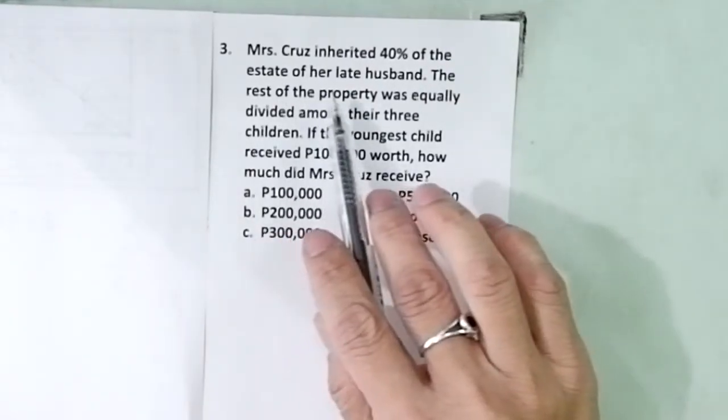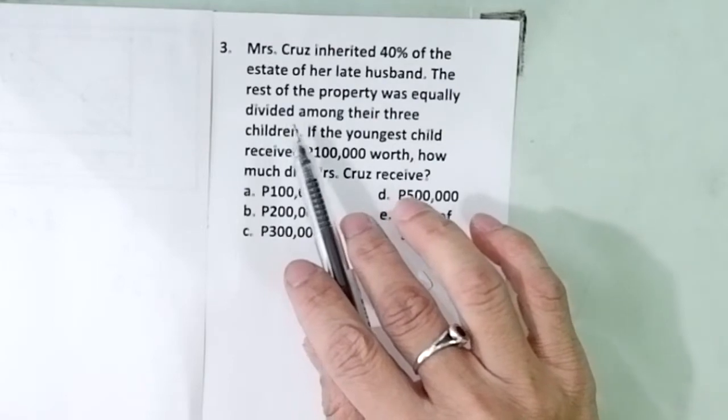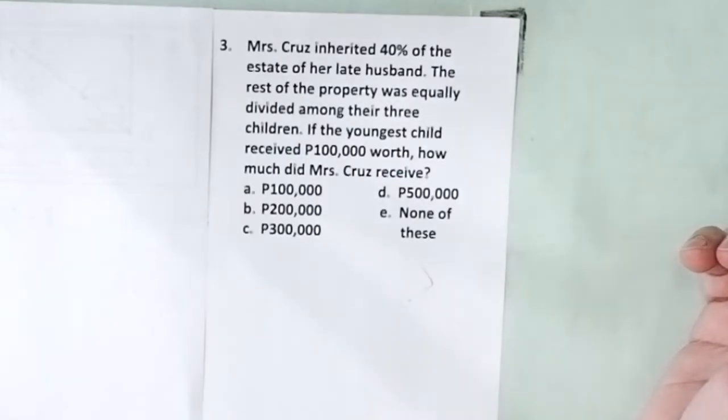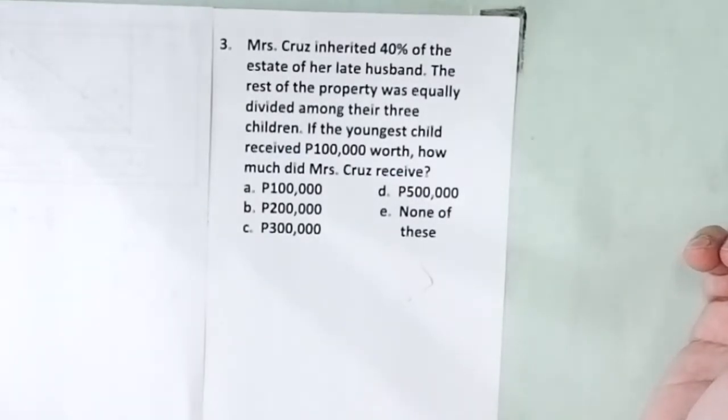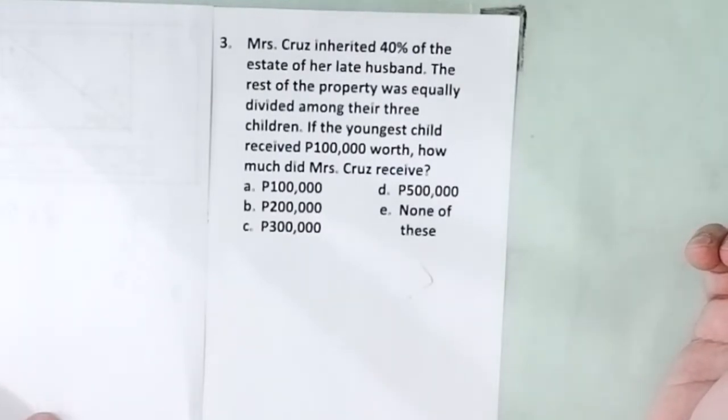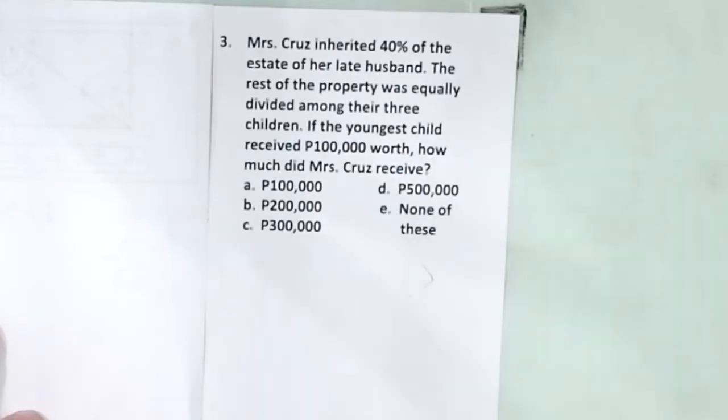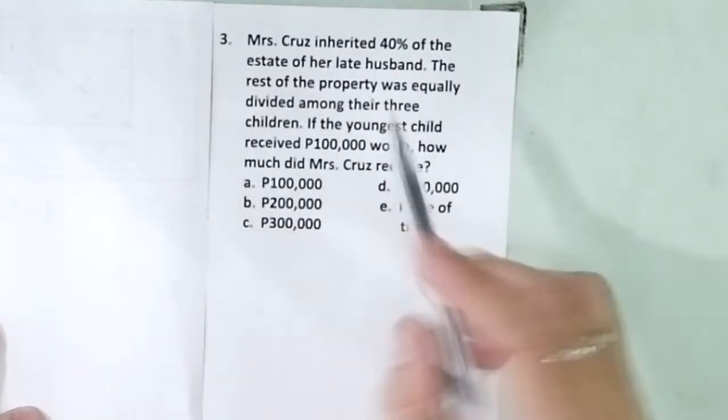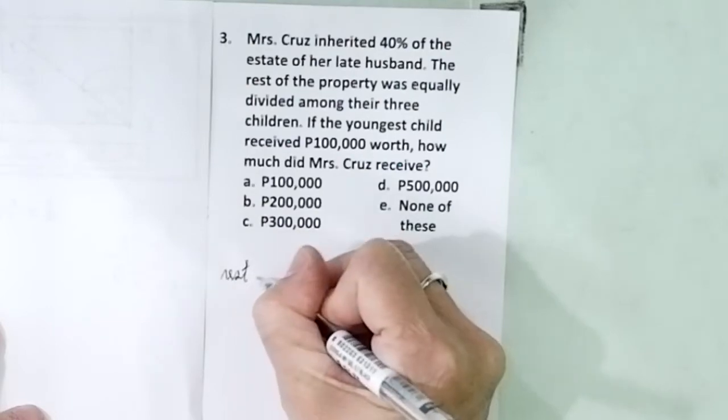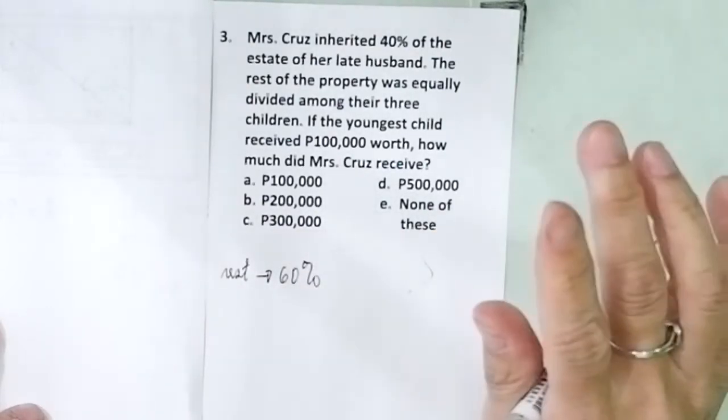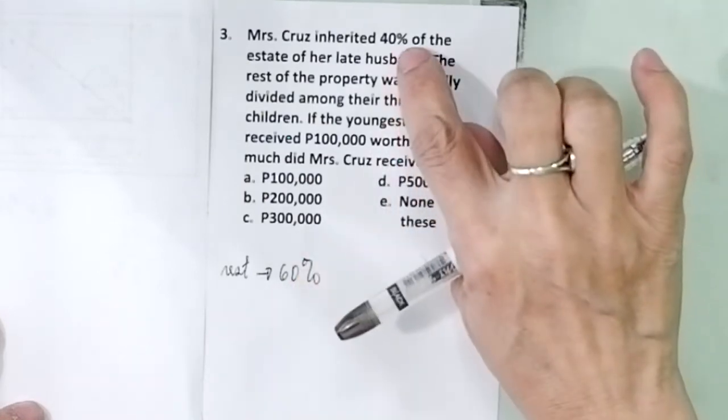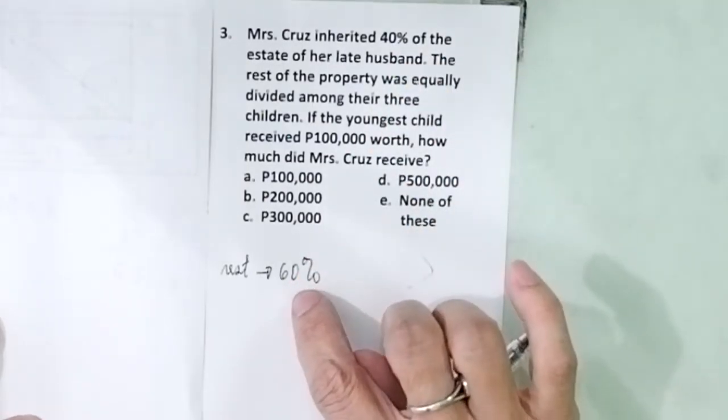Problem number 3. Mrs. Cruz inherited 40% of the estate of her late husband. The rest of the property was equally divided among their three children. If the youngest child received 100,000 pesos worth, how much did Mrs. Cruz receive? Mrs. Cruz inherited 40%. So the rest, the rest will be 60%. Remember that, 40% went to Mrs. Cruz. Rest, 100% minus 40%, which is 60%. That will be the rest.